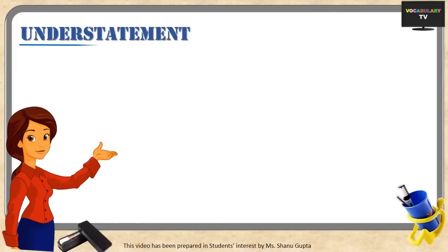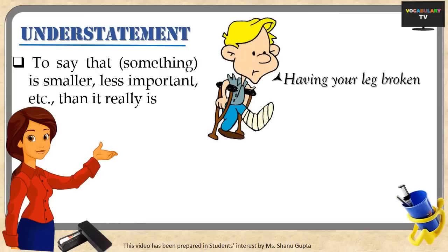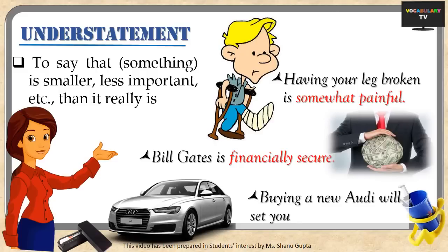The exact opposite of hyperbole is understatement — saying something is smaller or less important than it really is. For example, saying a broken leg is 'somewhat painful' is an understatement, as a fracture is one of the worst painful experiences. Saying Bill Gates is 'financially secure' when he is one of the richest men in the world, or saying 'buying a new Audi will set you back a few bucks' when it drains the majority of one's savings — all are examples of understatement.